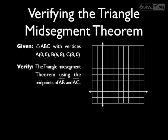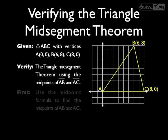So we're given triangle ABC with vertices at A(0,0), B(6,8), and C(8,0). And we're asked to verify the triangle midsegment theorem using segments AB and AC. Our first step is to use the midpoint formula to find the midpoints of segments AB and AC.